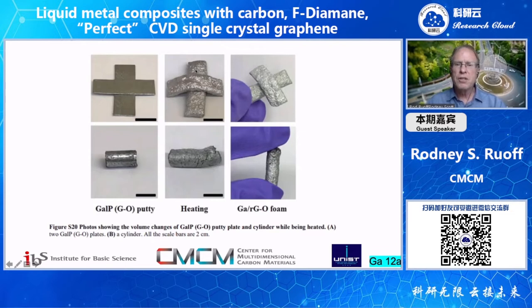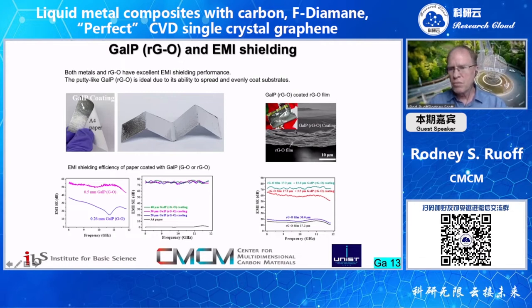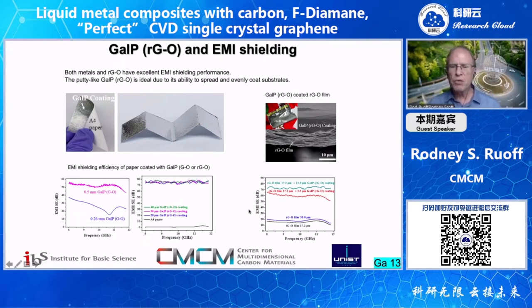This expansion upon heating creates a foam-like material, but when processed again, it can be converted back into the putty-like material. We found these composites can have excellent EMI — electromagnetic interference shielding performance. We could coat them onto A4 paper, or coat the putty-like material as a very thin layer on an RGO film. As we report in our paper, the EMI shielding is very effective.